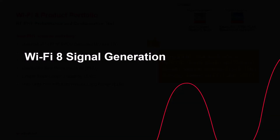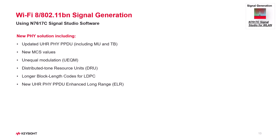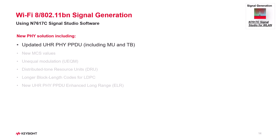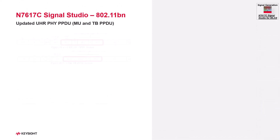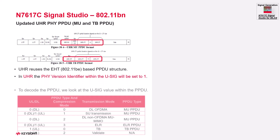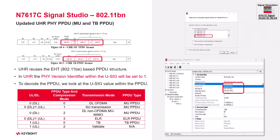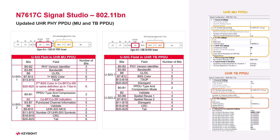Let's walk through some of the key Wi-Fi 8 signal generation features using Signal Studio. Wi-Fi 8 builds on Wi-Fi 7 in HT PPDU format, but now uses a physical version identifier to differentiate it. In Signal Studio, you will find a quick setup page for 802.11BN PPDU — adjust the config settings and you are set.